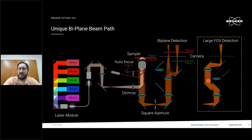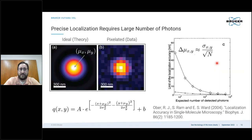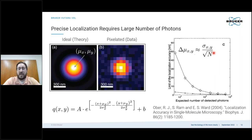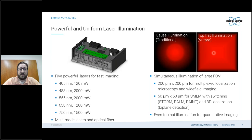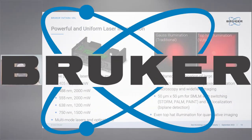Also shown is our bypass imaging mode, where two mirrors slide into place to bypass the biplane module and provide a larger field of view projection. As Winfried mentioned, since single molecule localization is fundamentally a fitting routine applied to pixelated data — rather than image formation like a typical microscope — the ultimate resolution achievable is fundamentally determined by the number of photons collected, in a one-over-square-root relationship. This has several design implications for the instrument. The first is that we use five powerful laser lines to provide bright images and facilitate fast imaging.